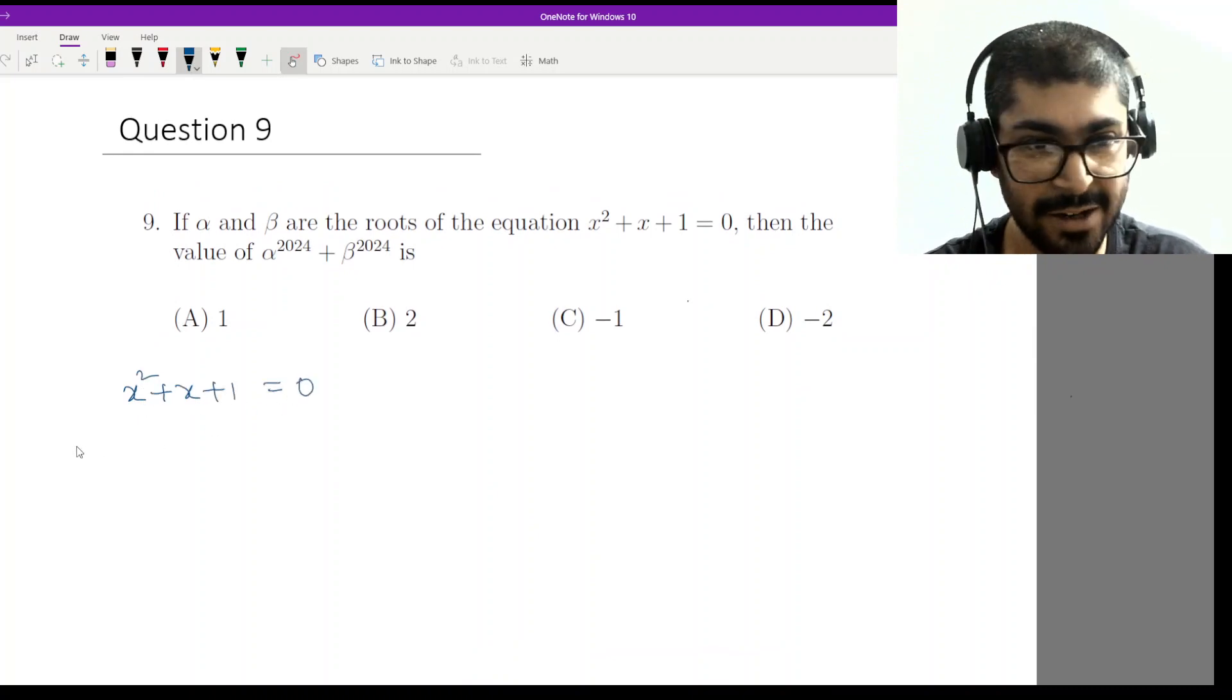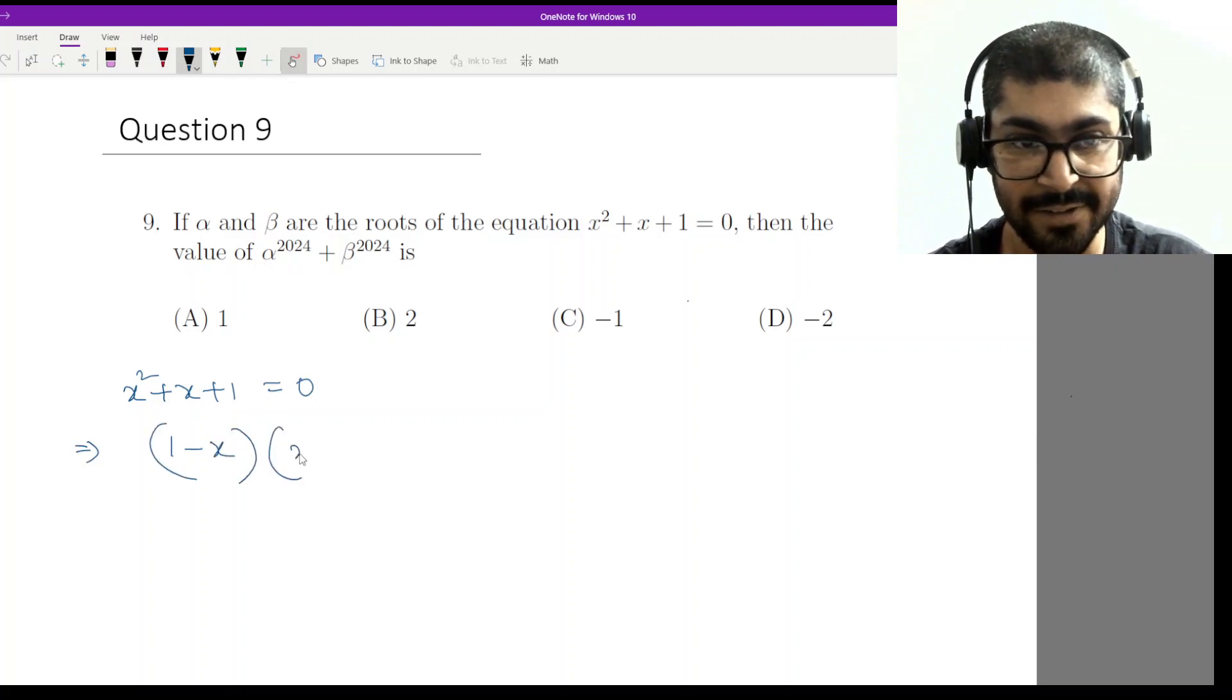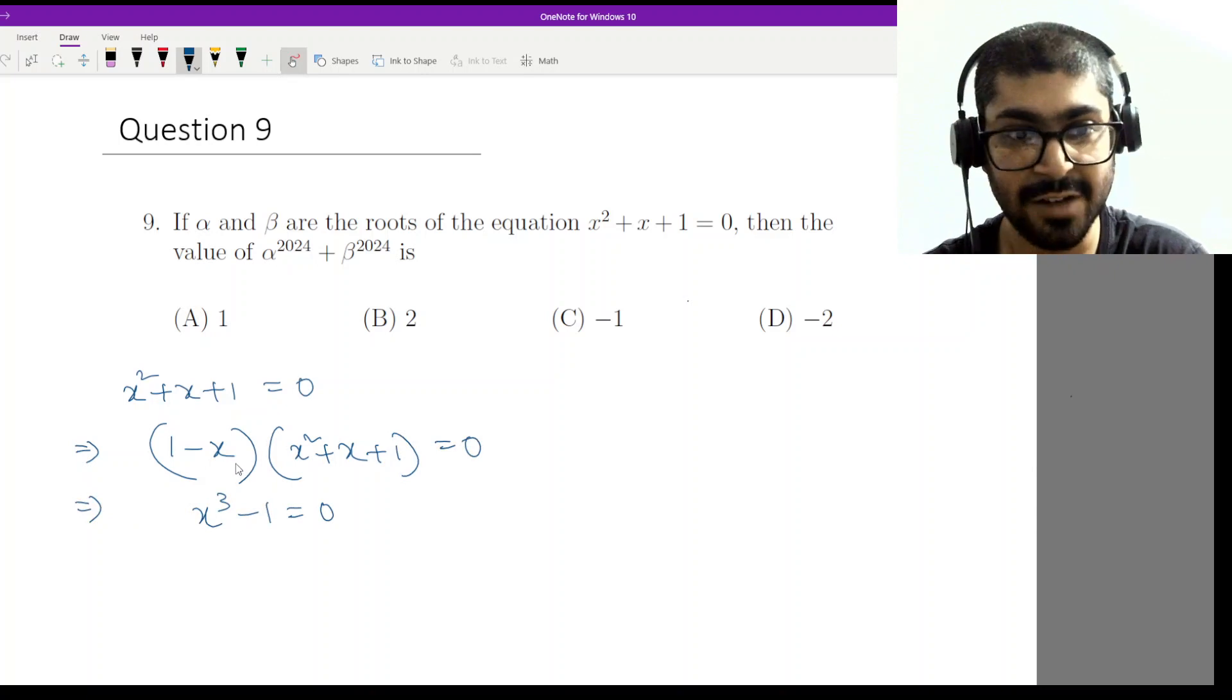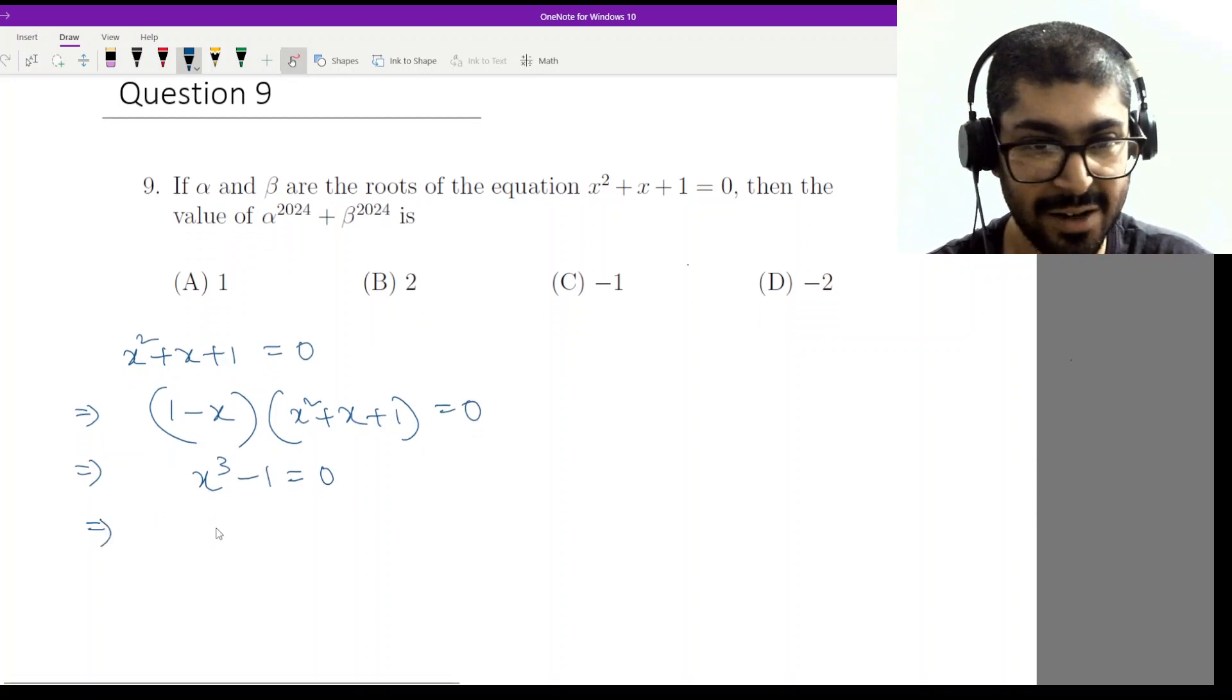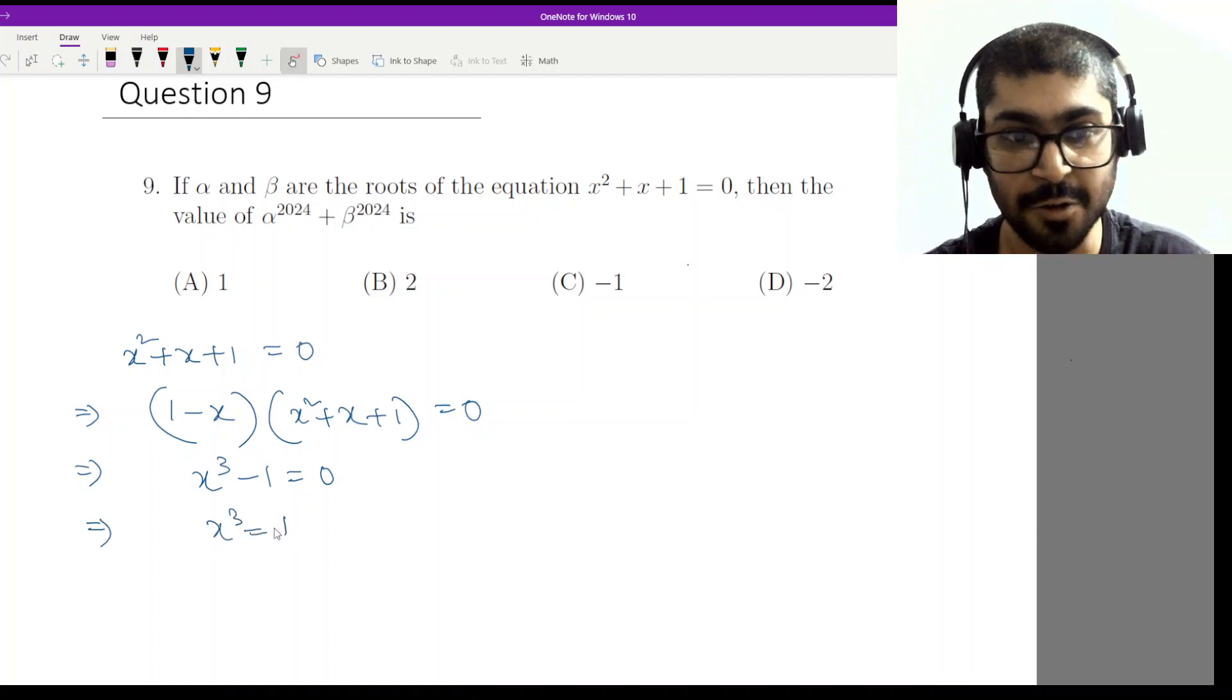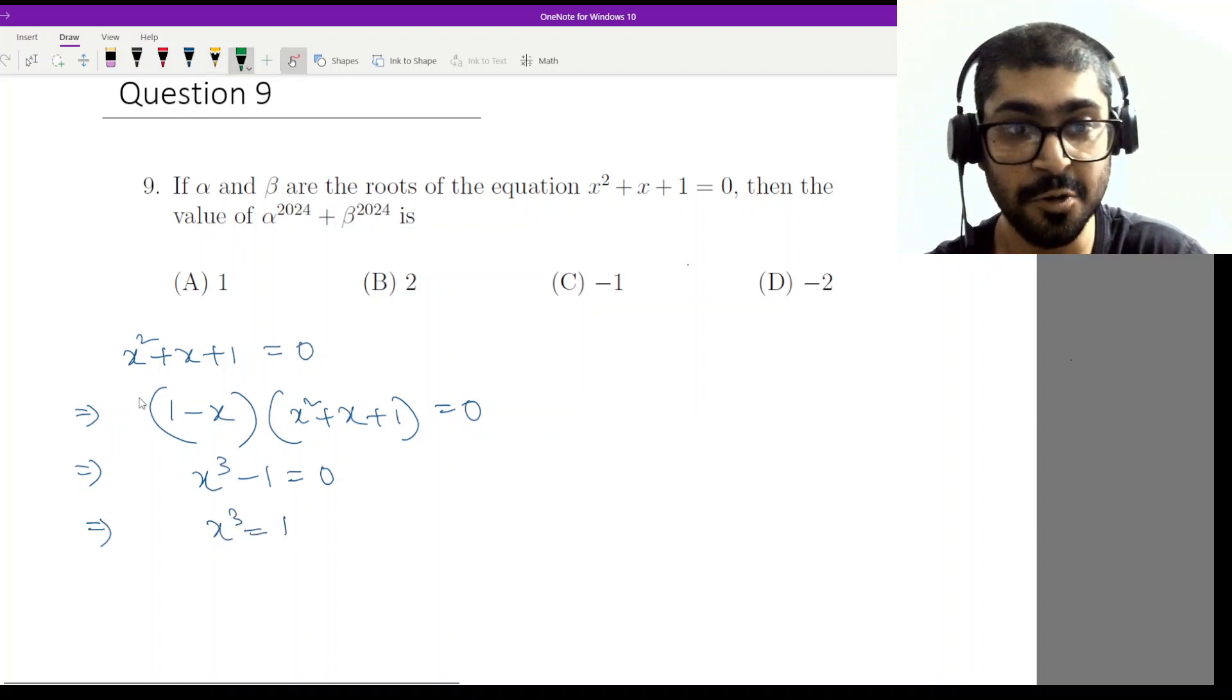Now this is a very common equation because if I multiply it by 1 minus x, what do I get? I have 0 on the right hand side. So I am basically getting x cubed minus 1 equal to 0. I hope you remember the formula. Now this is nothing but x cubed equal to 1.